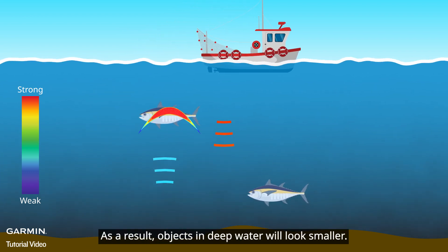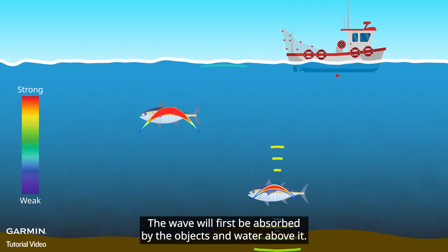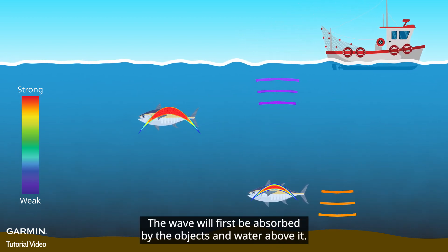As a result, objects in deep water will look smaller. The wave will first be absorbed by the objects and water above it.